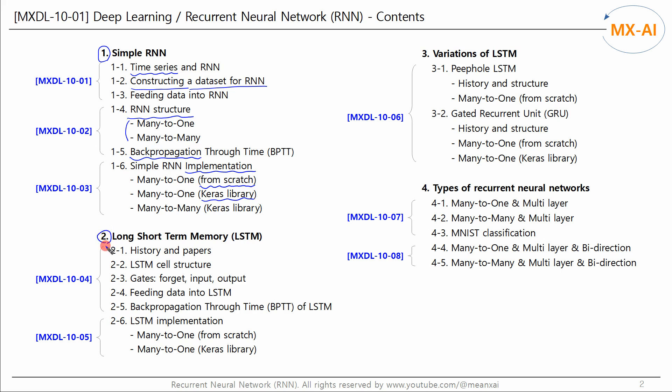In Chapter 2, we will look at Long Short-Term Memory, LSTM, which was designed to solve the vanishing gradient problem of Simple RNN. We'll look at the paper that proposed LSTM, the structure of LSTM, backpropagation in LSTM, and how the vanishing gradient problem is reduced compared to existing RNNs. Finally, we'll implement the LSTM model using Keras' library.